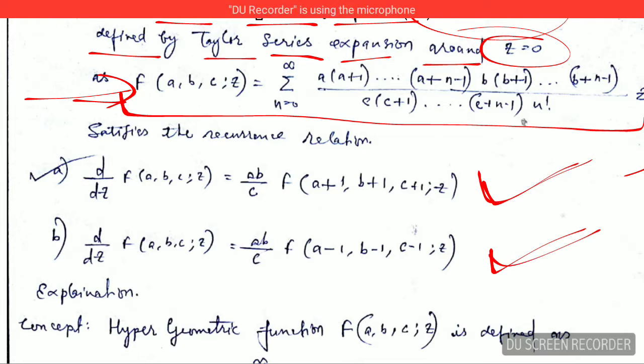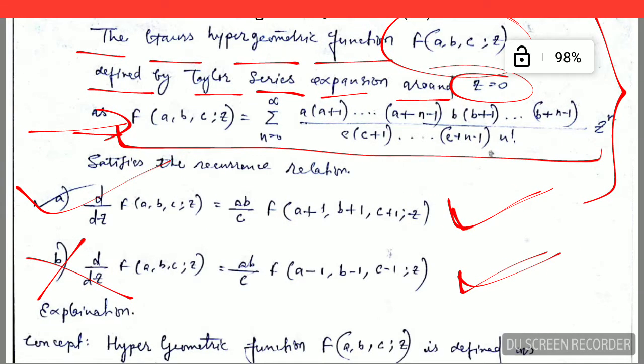I am telling you the answer: this one is correct and this is wrong. It is very easy to find the objective, that means it is very easy to find the correct answer. So let's do that.